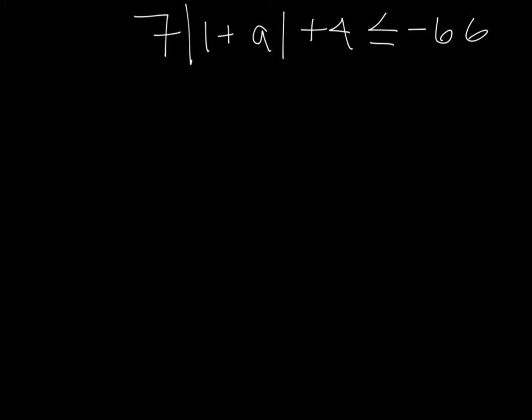For absolute value inequalities, we begin by isolating the absolute value. So in this example, first we're going to subtract 4 from both sides, and we get 7 times the absolute value of 1 plus A is less than or equal to negative 70.